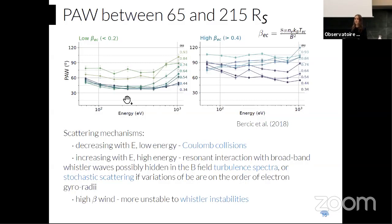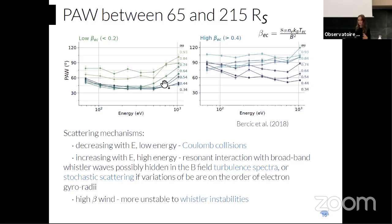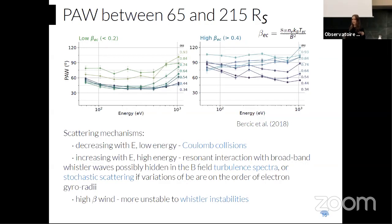This broadening implies that scattering mechanisms exist. We speculate that the low-energy part of the strahl is scattered by Coulomb collisions (decreasing trend with energy), while the high-energy part with an increasing trend is affected by turbulence through resonant interaction or stochastic heating. Additionally, high-beta wind is much more scattered than low-beta wind, likely because high-beta plasma is more unstable.